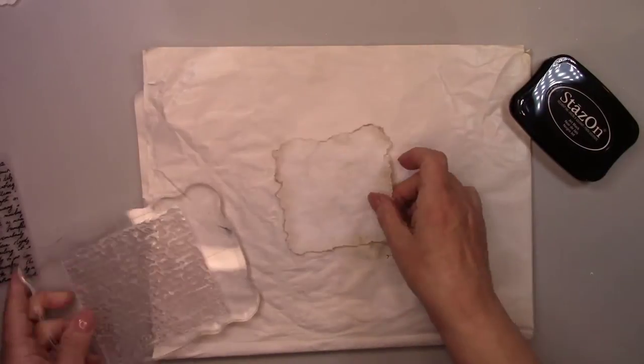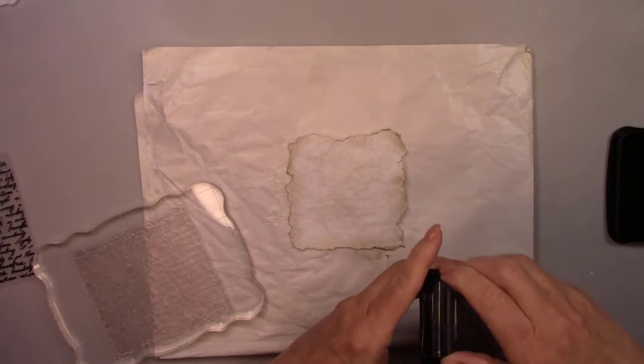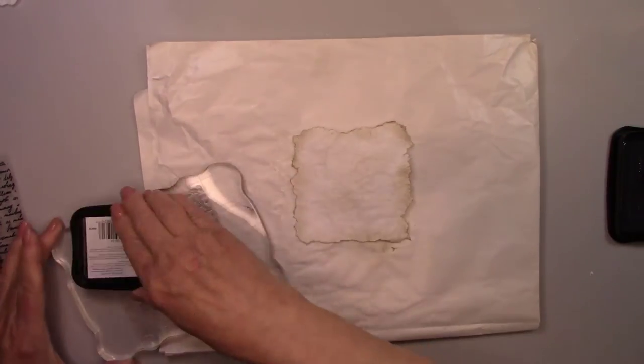I'm going to faintly stamp some script writing on it to make it look like an old letter that is faded, ripped, and torn.